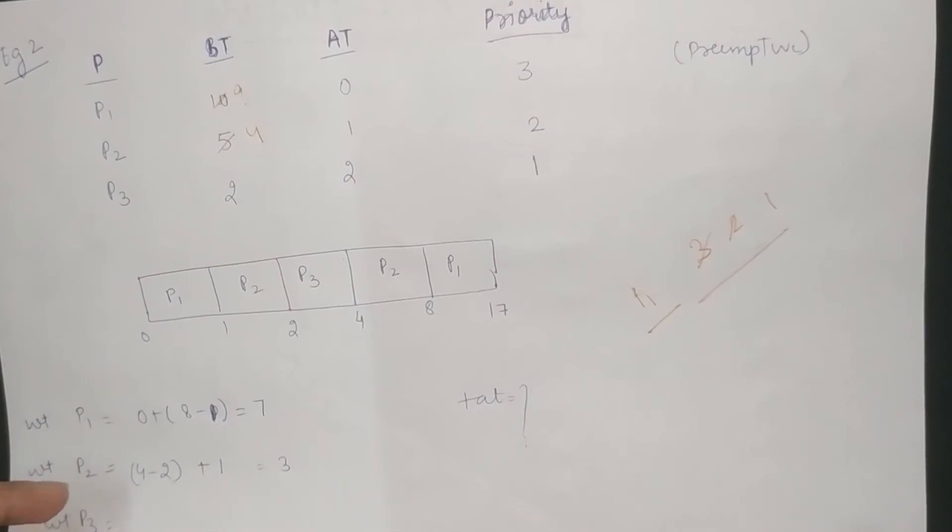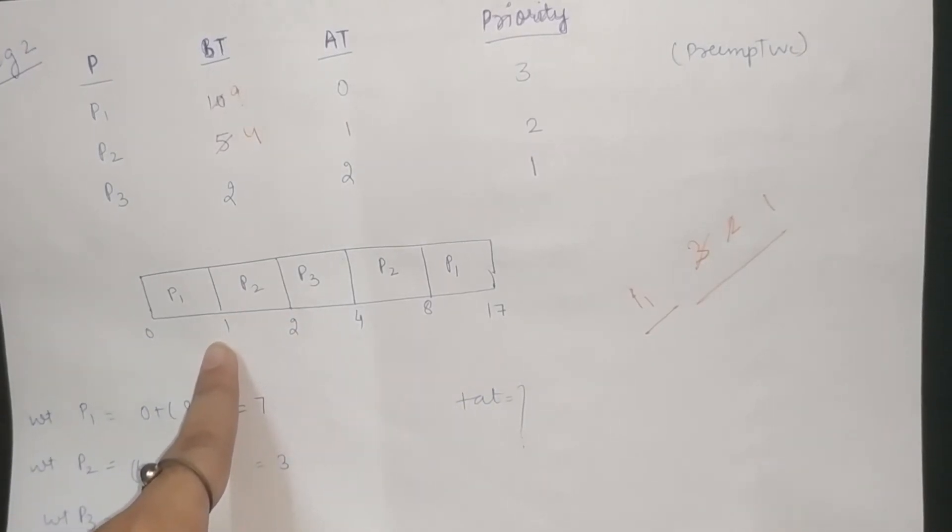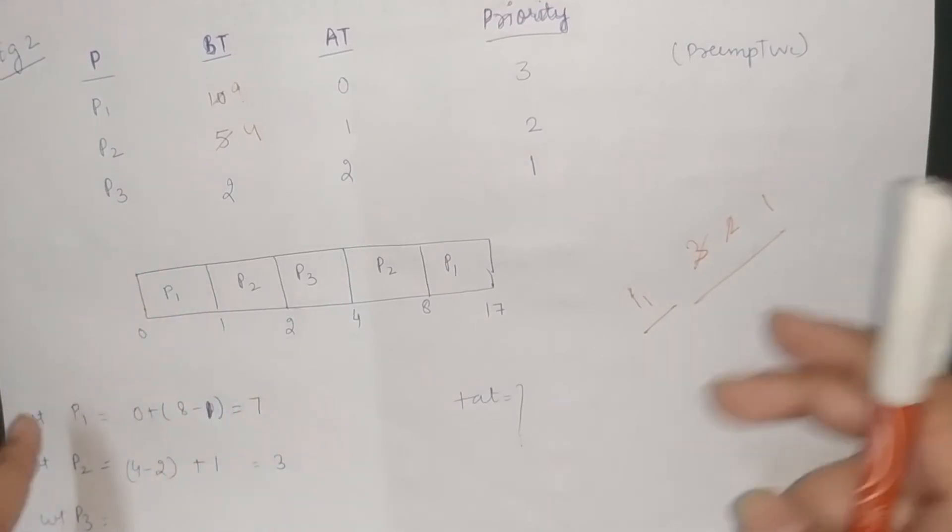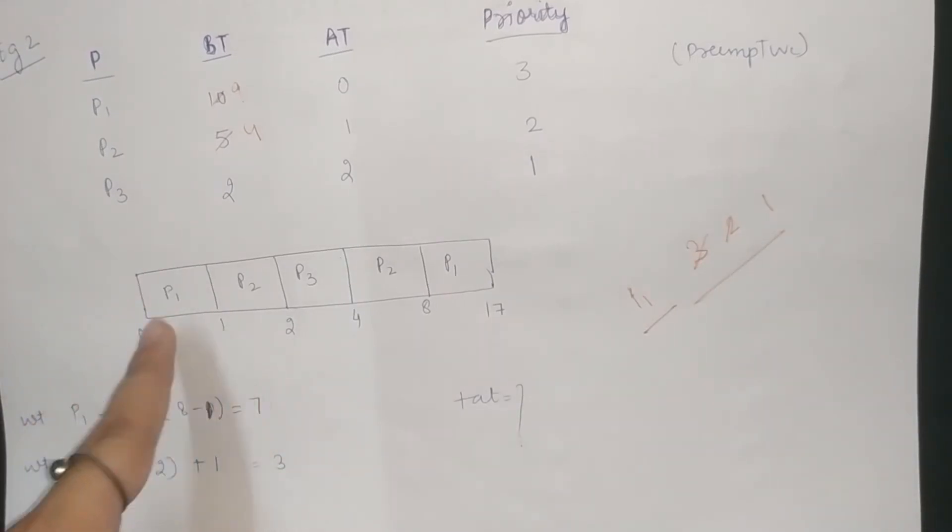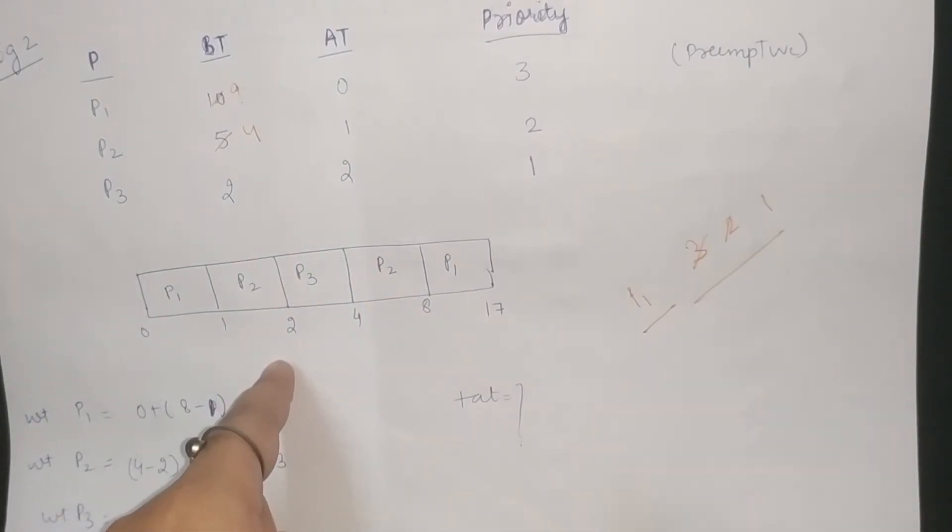The waiting time is calculated as: because P1 has 2 times here, 0 plus 8 minus the time at which P1 is completed initially. Right? So for P2, it's 1 plus 4 minus 2, the time at which it is completed initially.